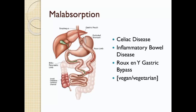Fat malabsorption, also known as steatorrhea, is a condition in which the body is unable to properly digest and absorb dietary fats. This can occur due to a variety of reasons, such as problems with the pancreas or bile ducts, certain medications, or digestive disorders such as celiac disease or Crohn's disease.